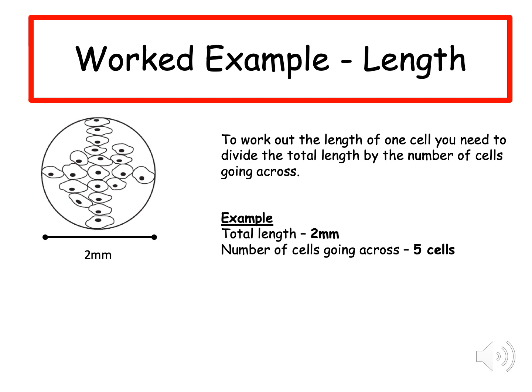If we are working out the length of one cell, you need to know the total length and the number of cells that are going across. In this example, the total length is two millimeters. We can see that in the diagram itself. And the number of cells going across is five cells. You then divide the total length by the number of cells going across. So two millimeters is divided by five cells. And this gives you 0.4 millimeters. This means that 0.4 millimeters is the length of each cell.